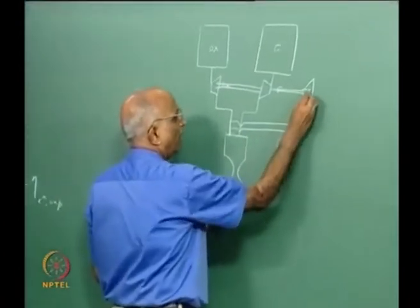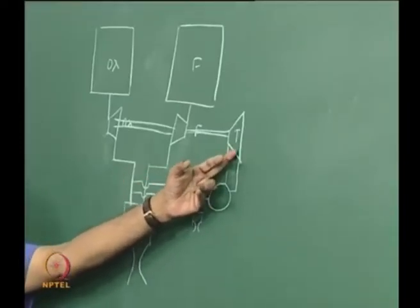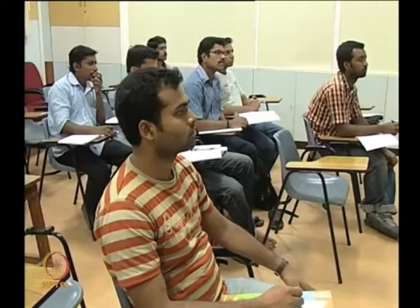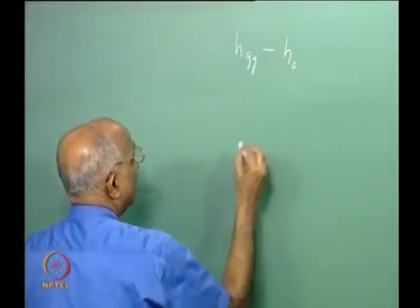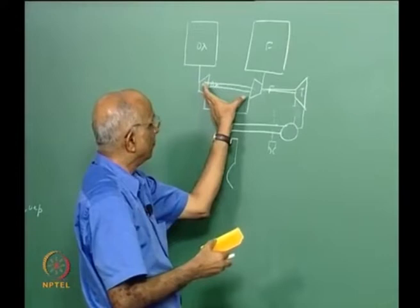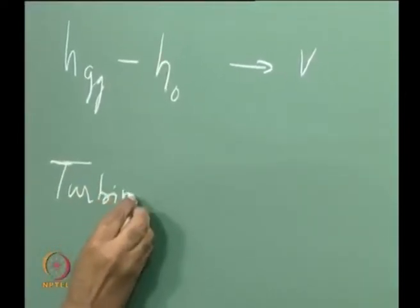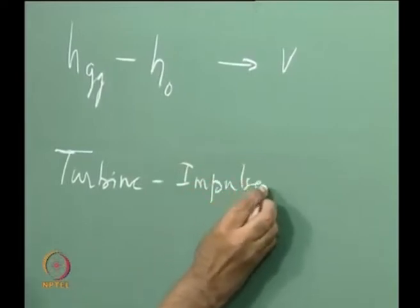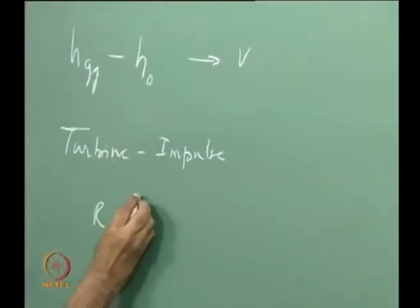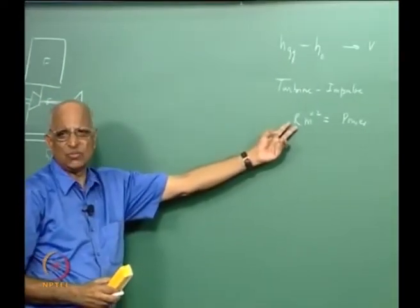The turbines we use are generally of the impulse type, meaning velocity-based. Enthalpy at the exit of the gas generator — the inlet to the turbine — is converted into high-velocity gas. That velocity impinges on blades, rotates them, and drives the pumps. The power is expressed as resistance times something like mass-flow-rate squared.